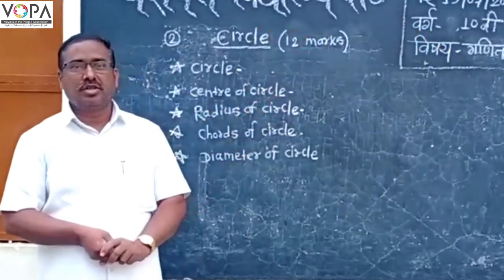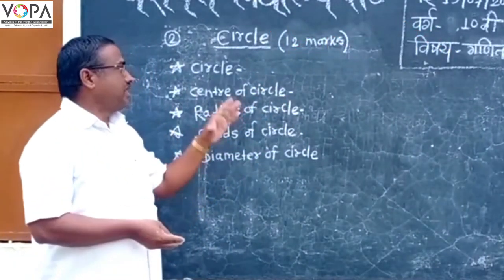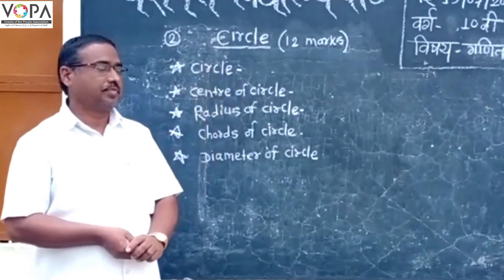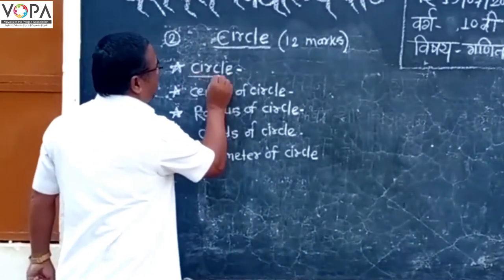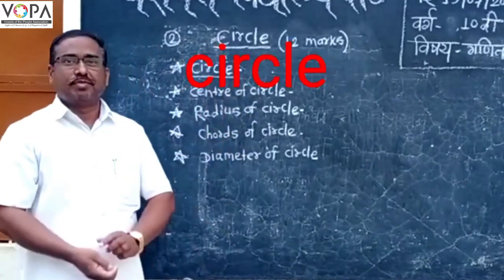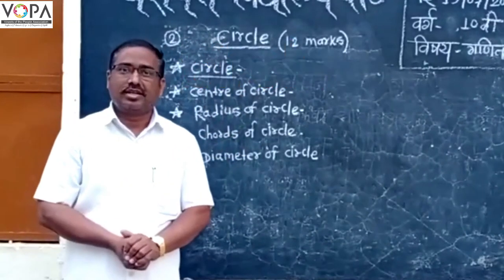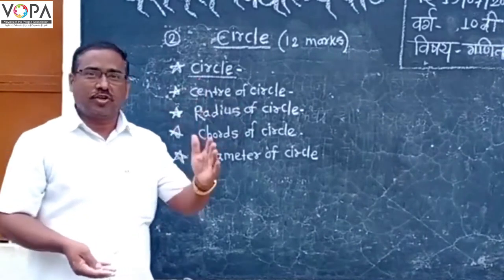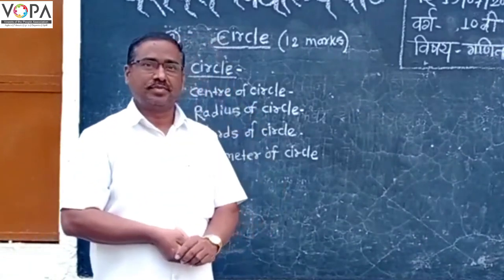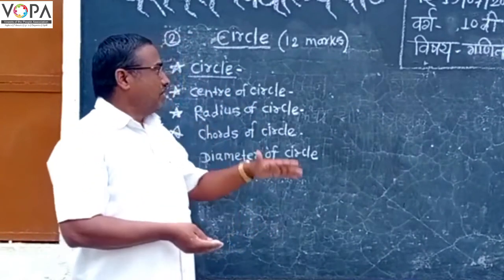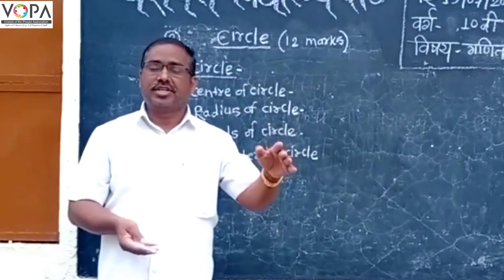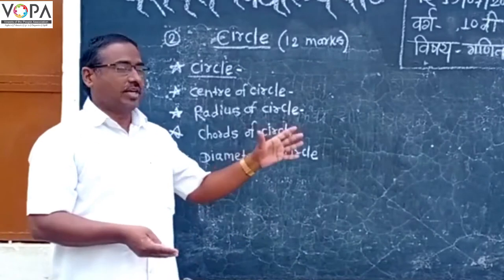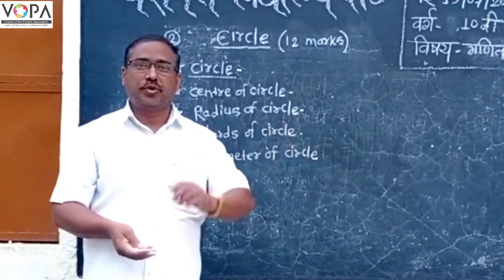First, we have to learn the basic concepts related to the circle. What is meant by circle? The definition of circle is: the set of all points which are equidistant from a fixed point in a plane. Such a figure is said to be a circle.